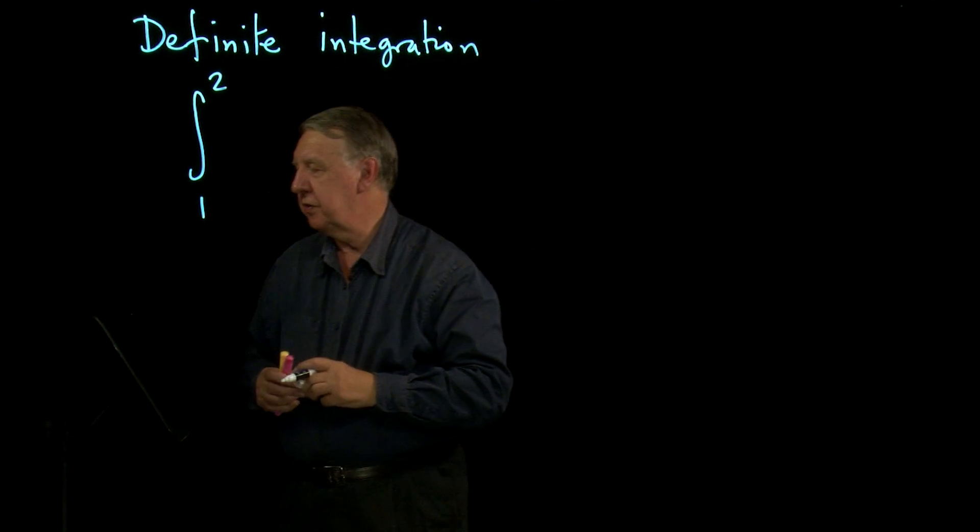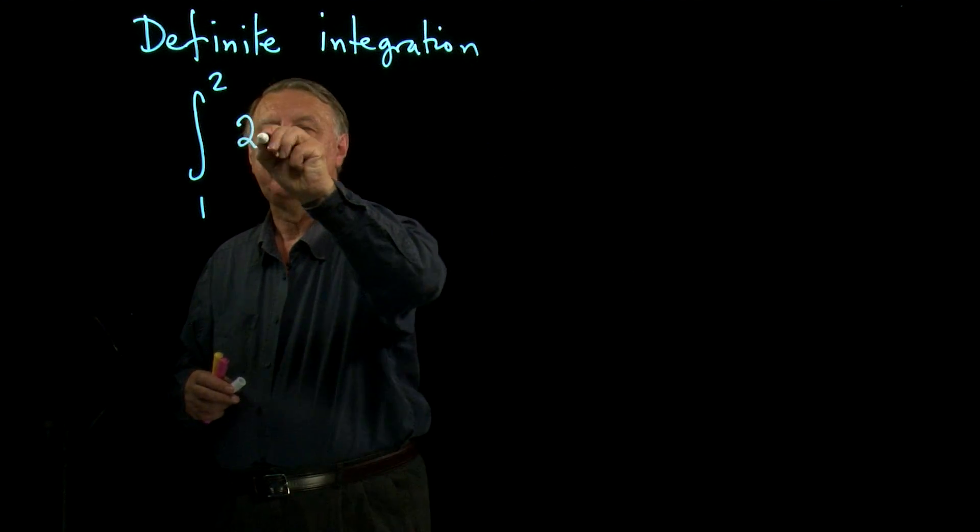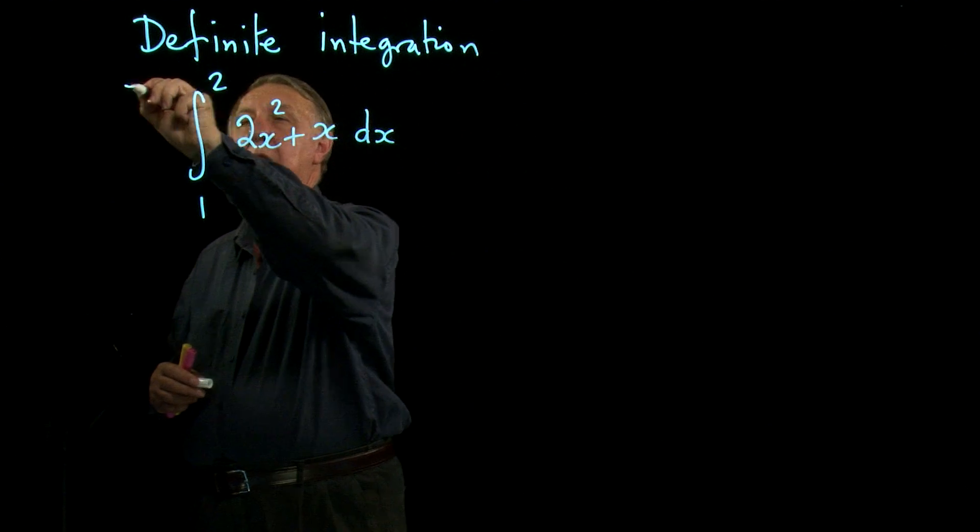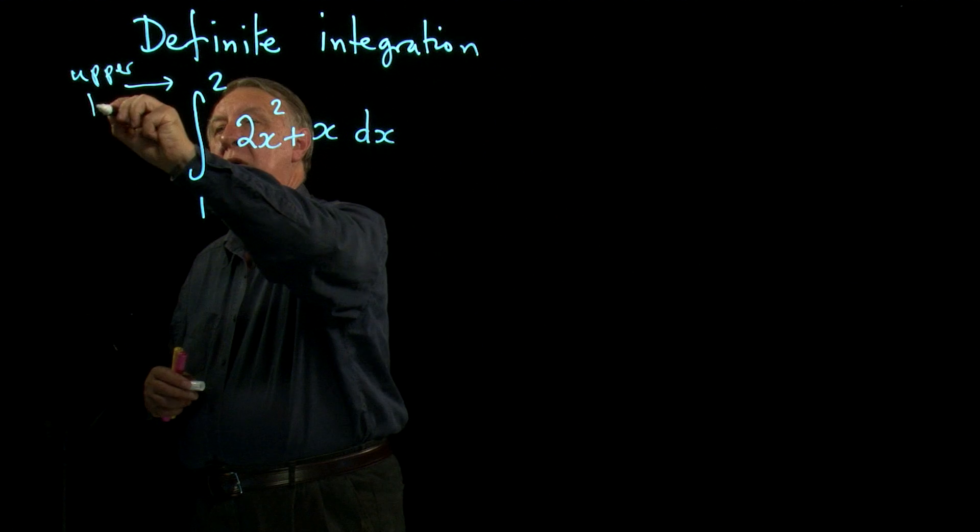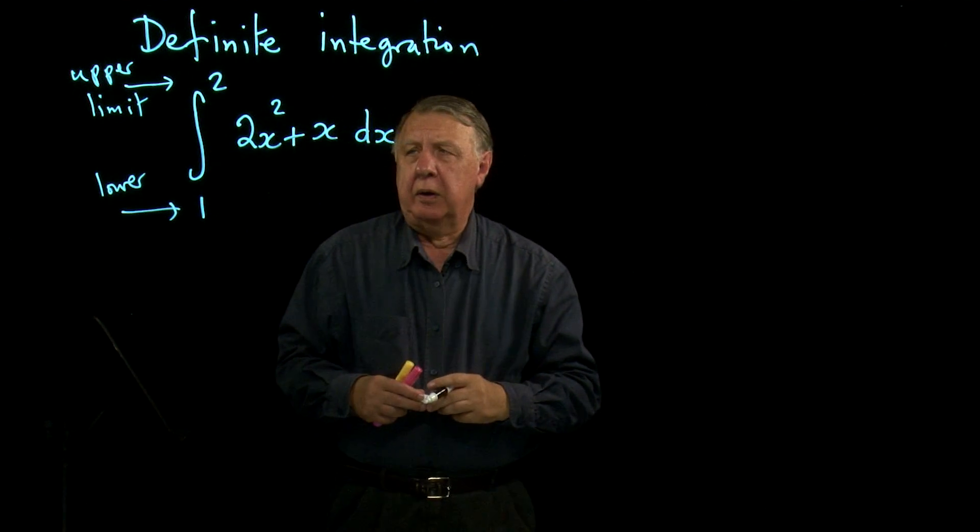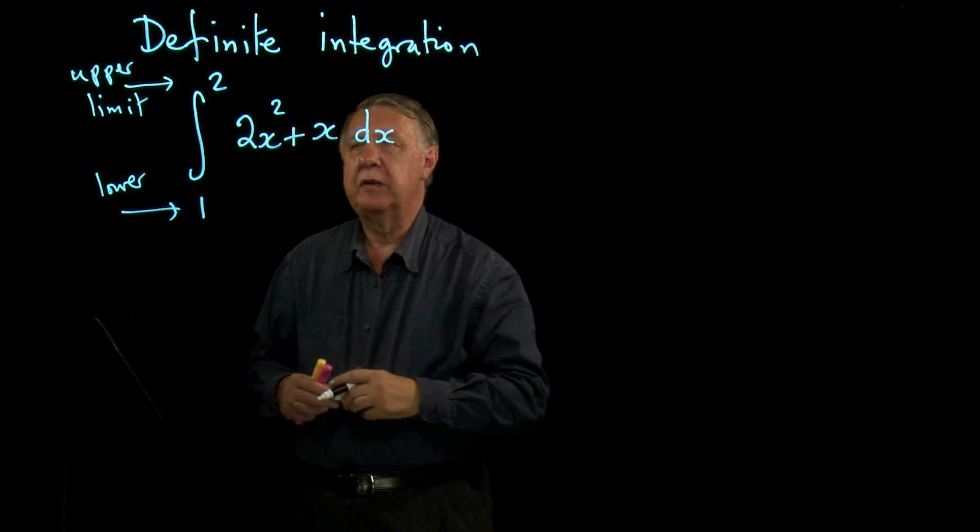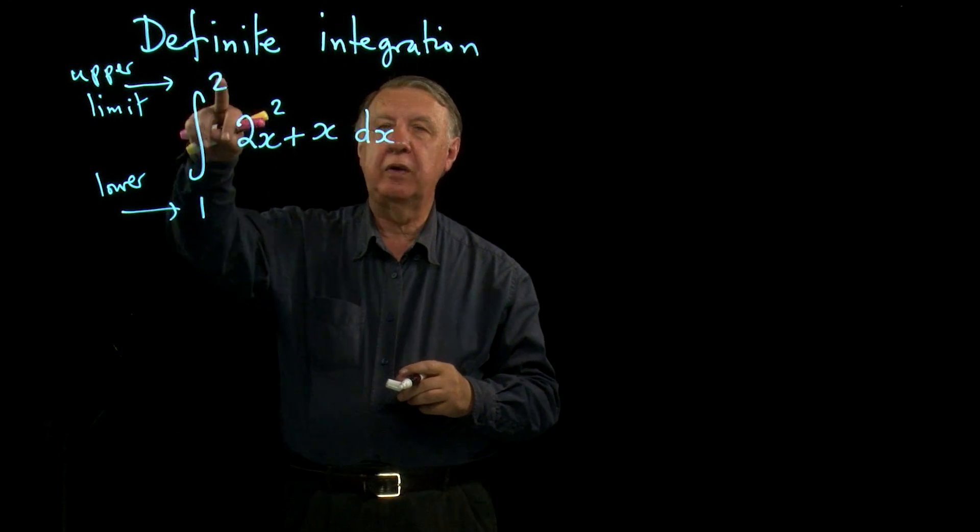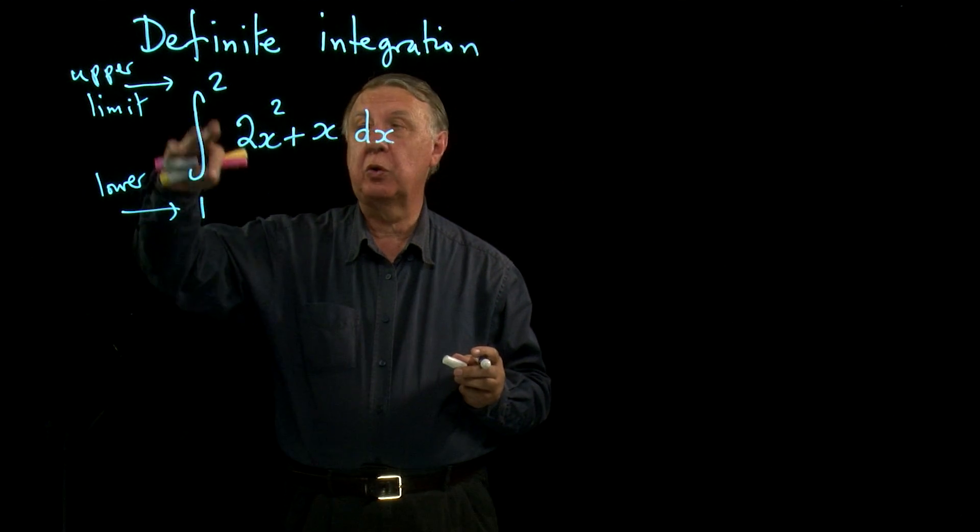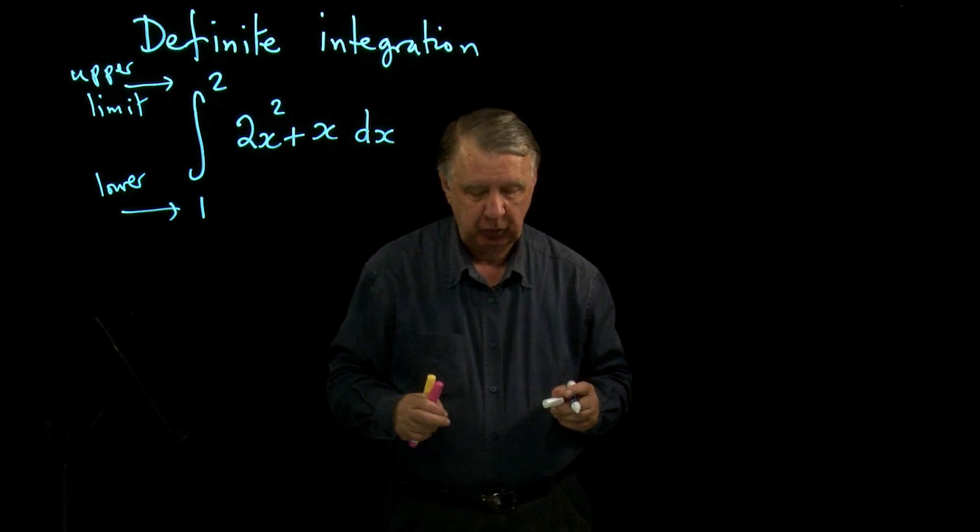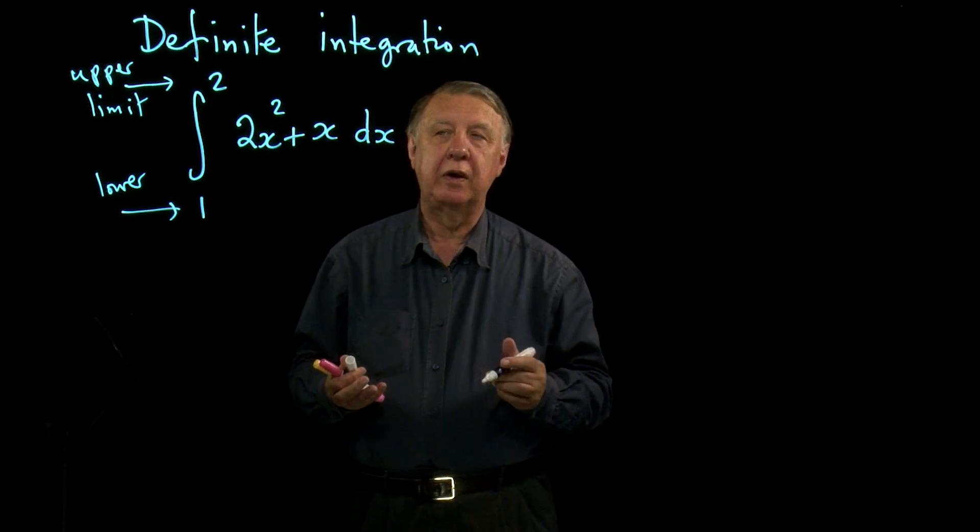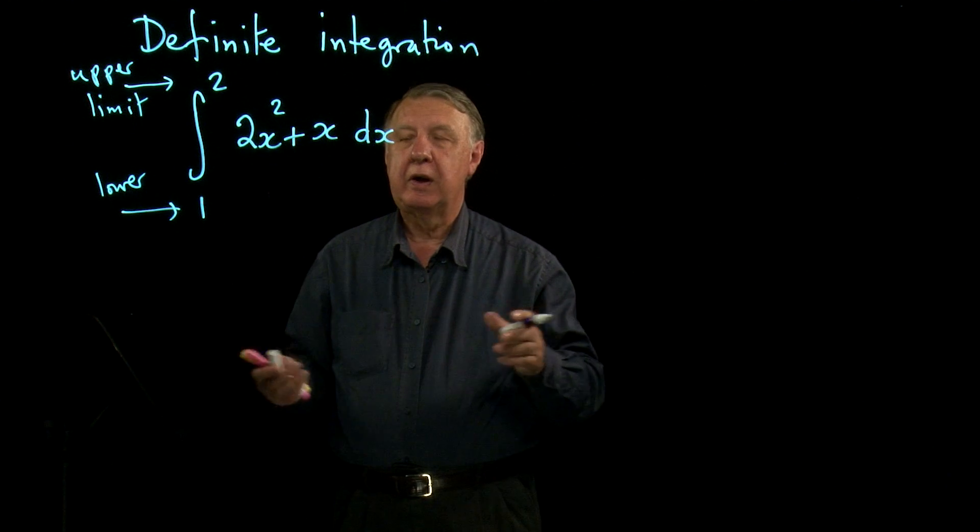So we're going to look at what the concept of definite integration is all about. A definite integral first of all has two numbers at the top and bottom of the integral sign. These numbers are referred to as limits - this one is the upper limit and this one is the lower limit. Most of the work, in fact it's probably safe to say all of the work that you do at AS level, this number will be smaller than that number, but it doesn't have to be. I'm only going to demonstrate the process. I'm not going to prove what this stands for, but I will show you what it stands for.